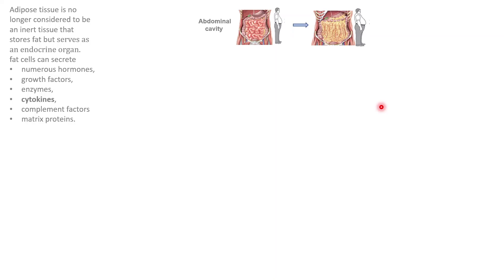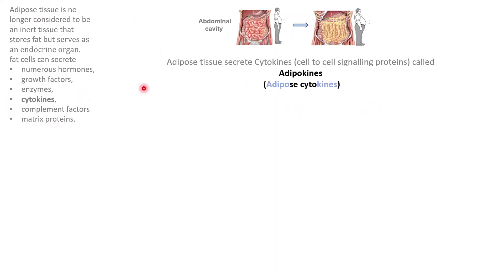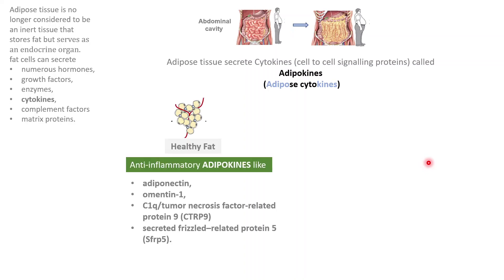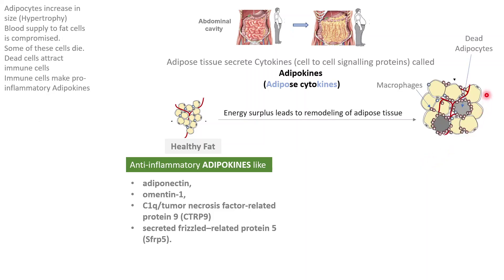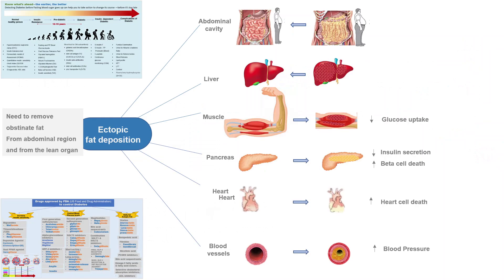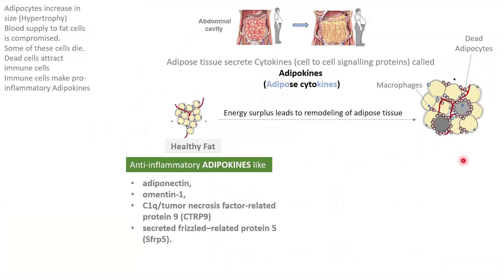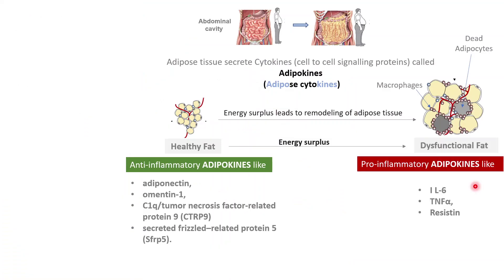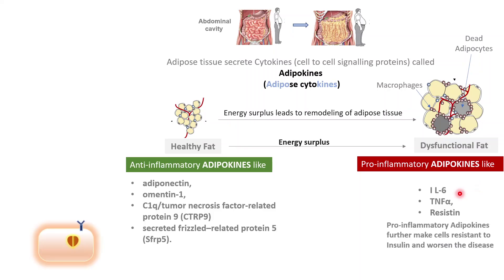Adipose tissue or fatty tissue is not an inert tissue. Fat cells secrete several important chemicals like cytokines — cell-to-cell signaling proteins made by adipocytes, which are fat cells. Normal healthy fat secretes anti-inflammatory adipokines. However, when surplus energy is present, fat cells increase in size; this compromises the blood supply to the fat cells. Some of the fat cells die, and these dead fat cells attract immune cells. Immune cells make pro-inflammatory adipokines like IL-6, tumor necrosis factor, and resistin. These pro-inflammatory cytokines circulate in the blood and damage cell receptors, causing further insulin resistance and increasing the spread of the disease.